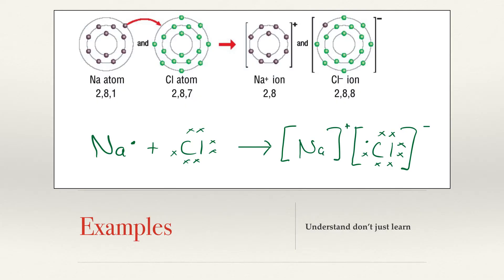Sodium chloride, also known as table salt, is the most well-known example of ionic bonding. Sodium is in group 1 and therefore has 1 electron in its outermost orbit. Chlorine is in group 7 and therefore has 7 electrons in its outermost orbit. Don't forget to include the charges — sodium loses 1 electron and becomes more positive, whereas chlorine gains an electron and becomes more negative. Bonding occurs due to the atoms wanting to become stable, i.e. both have a full outer orbit.